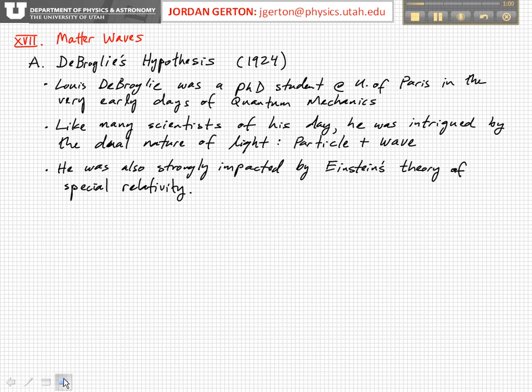The first experiment which was actually done to show that things which we normally think of as particles, like electrons, actually also have wave-like properties, was the Davison-Germer experiment. And it was preceded by just a few years by the hypothesis of Louis de Broglie.